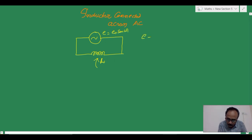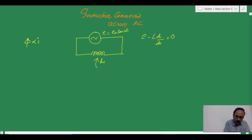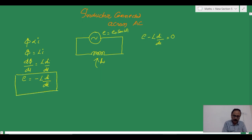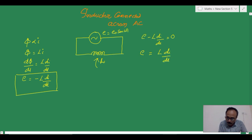We can write E minus L(di/dt) = 0. The flux is directly proportional to the current passing through the circuit, and this flux equals Li, where L is the coefficient of self-induction. So dΦ/dt = L(di/dt), and the EMF equals minus L(di/dt). Therefore, E = L(di/dt).